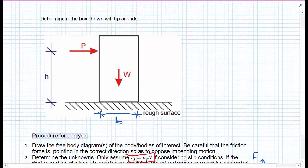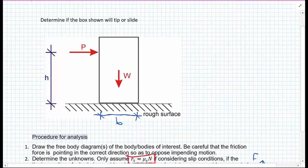In this problem, we don't know whether the box is going to simply slide, so whether we'll just get a translation in the horizontal direction, or whether the box will tip about this corner here.